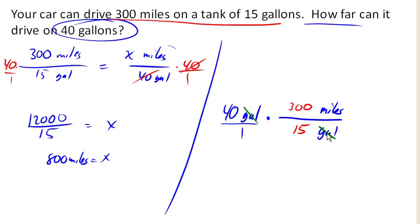So my gallons reduces. I get 40 times 300 is 12,000 miles divided by 15 on the bottom. Notice my units have canceled there. That simplifies to 800 miles.